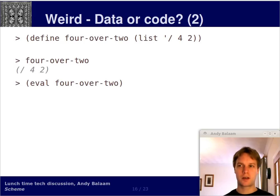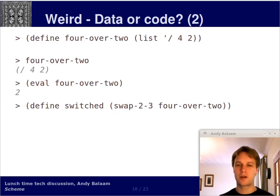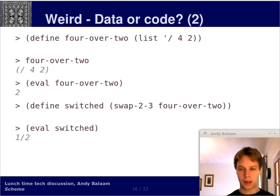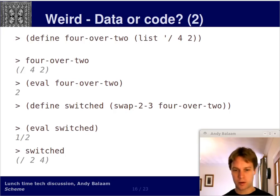Now we have this function called eval, which means treat this as code. So if you treat that as code, we're going to divide four by two, and we get the answer two. Now, let's make a new symbol called switched, which is the result of running the swap-2-3 procedure and passing the argument four-over-two. Are you seeing where I'm going? So if I evaluate switched, what is the answer going to be? Let me give you some hints. Four-over-two is going to have swap-2-3 applied to it. So it's going to become slash two, four. Then if we run that code, what do we get? Well, we get a half. Divide two by four, you get half. And just to demonstrate what's going on there, if we look at switched, switched is slash two, four, just as I said. Make sense? Weird, huh?